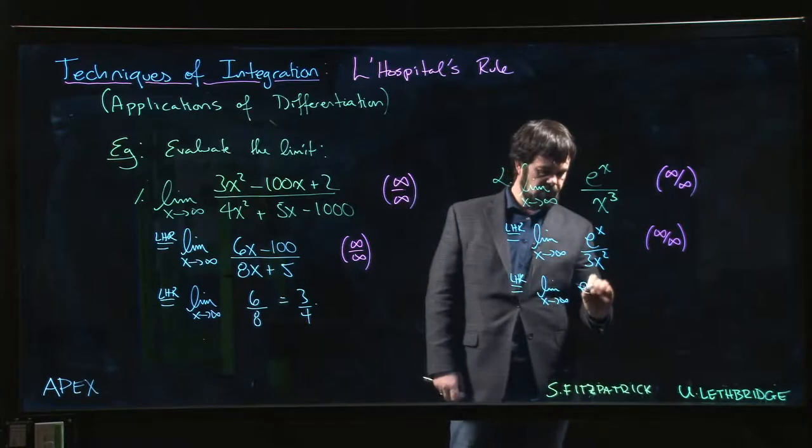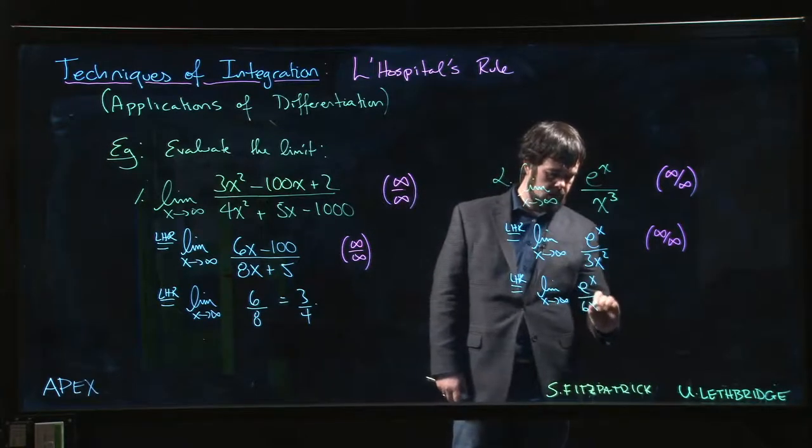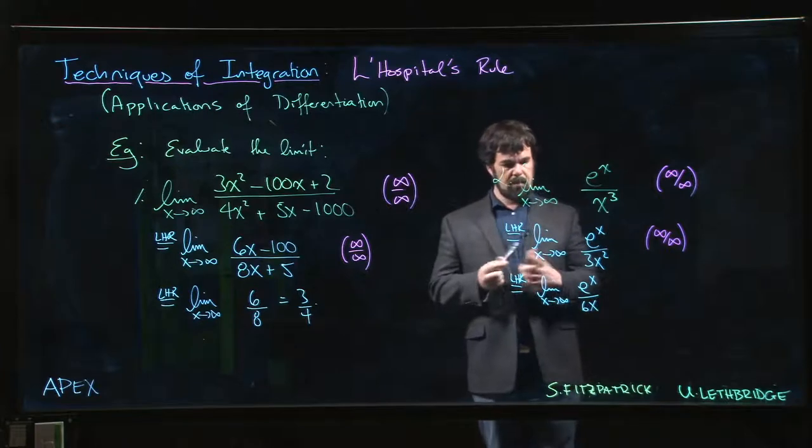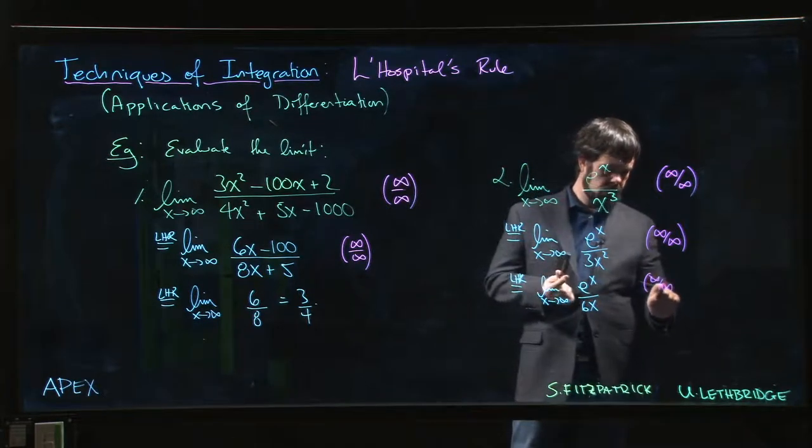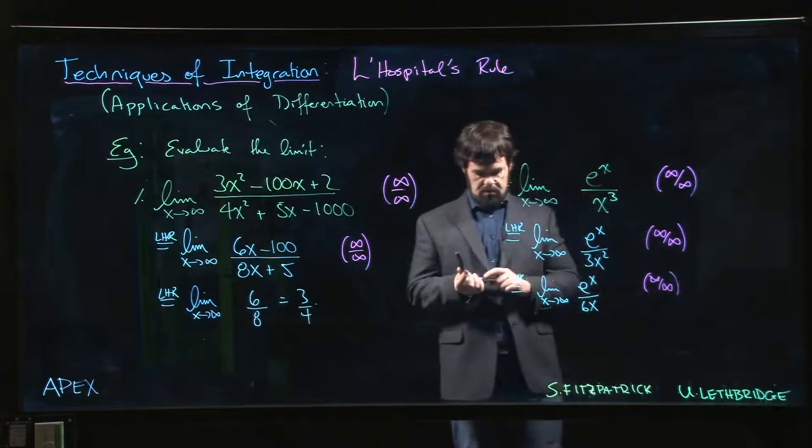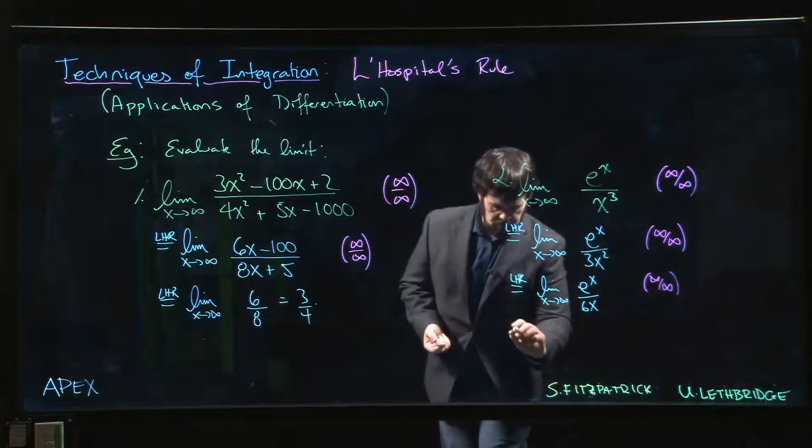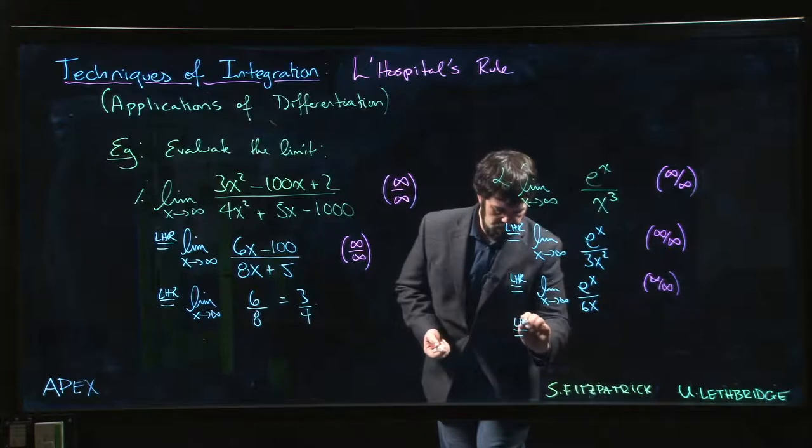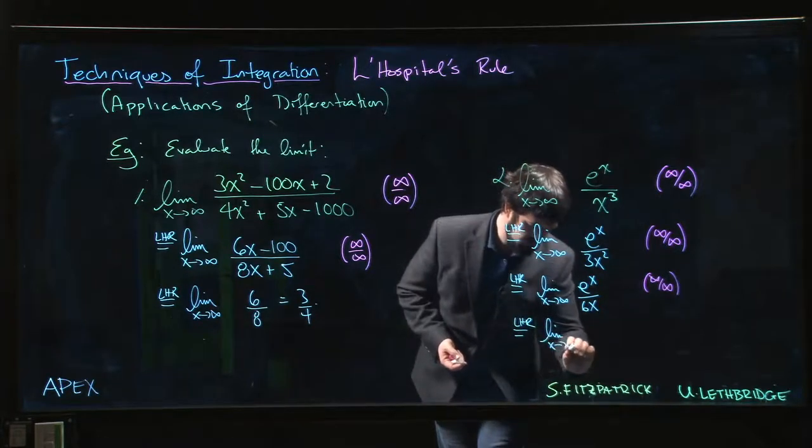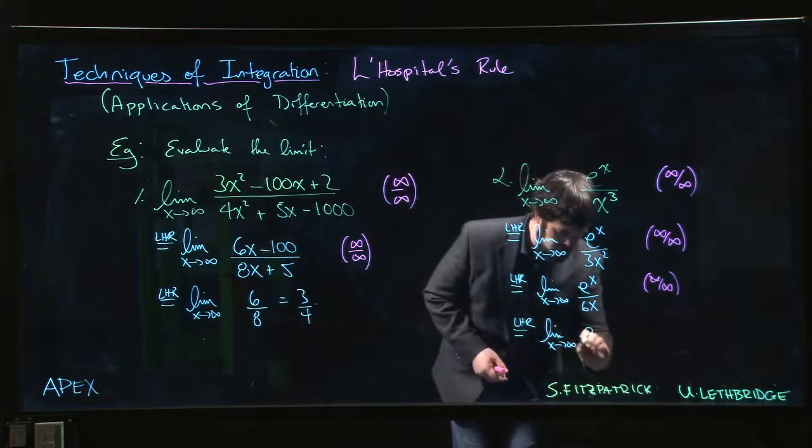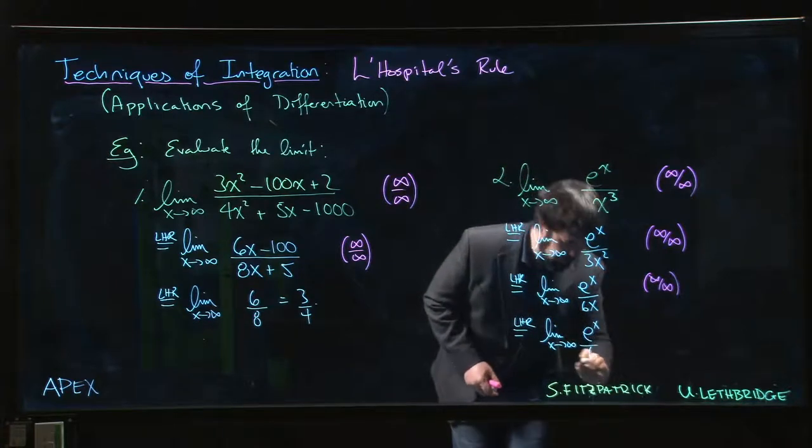So we use L'Hopital's rule one more time. Still infinity over infinity, so let's do it a third time. And we get the limit as x goes to infinity of e to the x over 6.